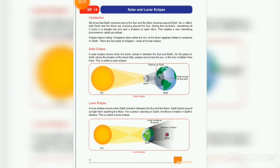Now you will open your student reader SR number 14. Solar and lunar eclipse — introduction. We know that Earth revolves around the sun and the moon revolves around the Earth. So in effect, both Earth and moon are revolving around the sun. During this revolution, sometimes all three come in a straight line and cast a shadow on each other.